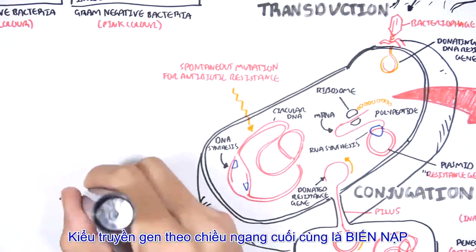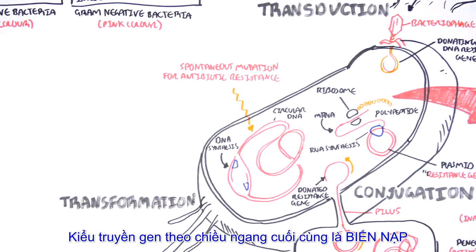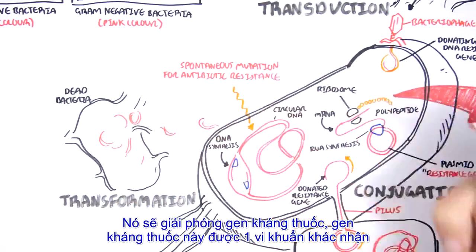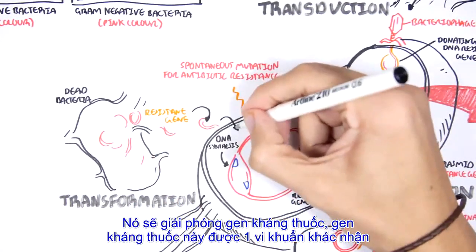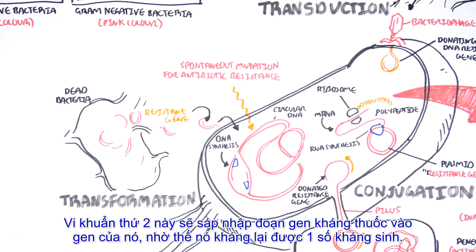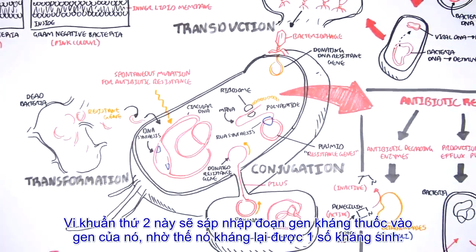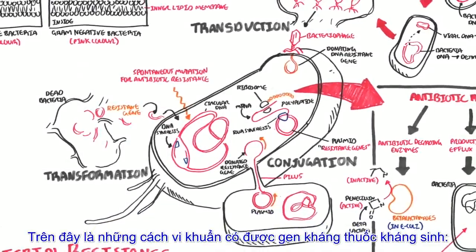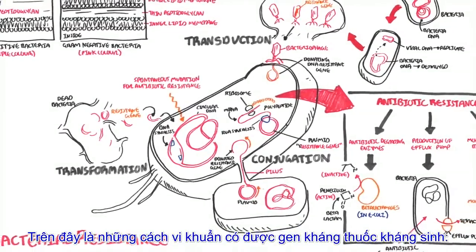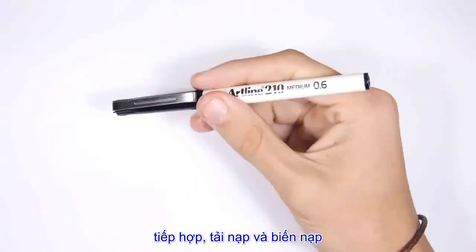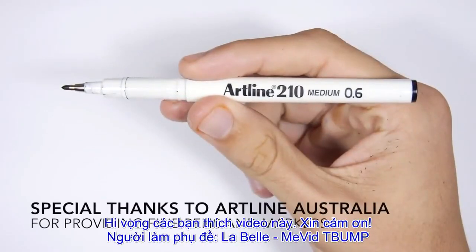The last type of horizontal gene transfer is called transformation, which is when a bacteria containing a resistant gene dies or lyses, releasing the resistant gene. The resistant gene can then be picked up by another bacteria, which incorporates it into its genome, allowing it to become resistant to some form of antibiotic. So those are the important ways bacteria acquire resistant genes: conjugation, transduction, and transformation.